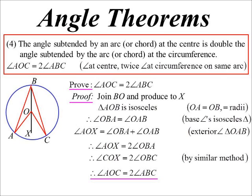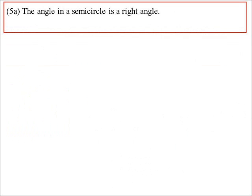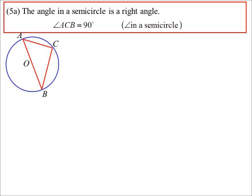That then leads to another theorem, the angle in the semicircle theorem. It's always going to end up being a right angle, and the reason for that is it's the same theorem we just did, it's just that the angle at the center now is a straight line.